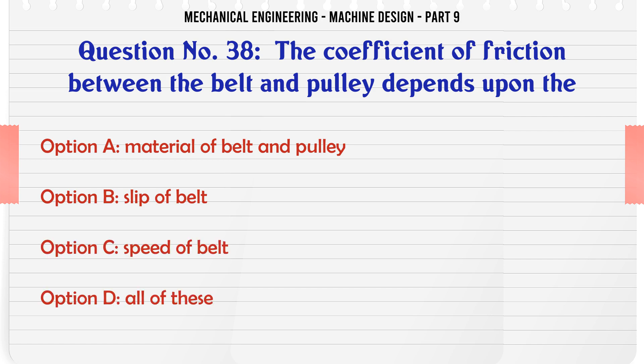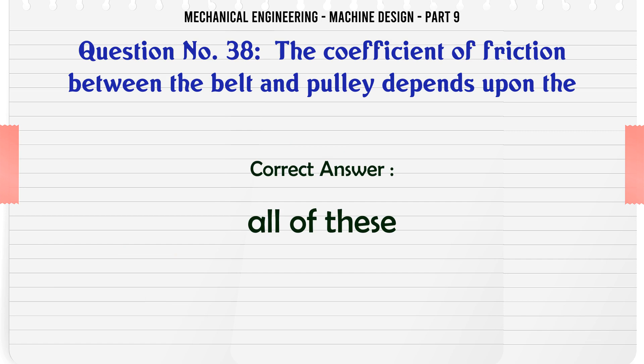The coefficient of friction between the belt and pulley depends upon the: A. Material of belt and pulley, B. Slip of belt, C. Speed of belt, D. All of these. The correct answer is All of these.